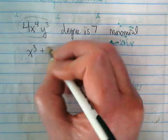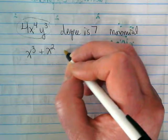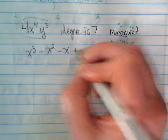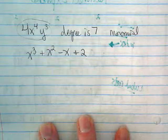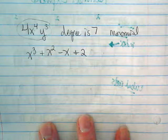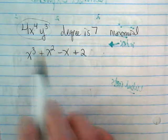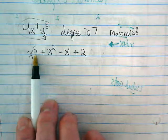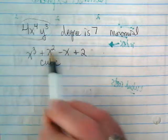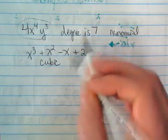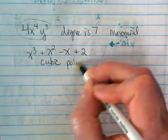Let's try this example. x to the third plus x squared minus x plus two. To name it, you only look at its highest exponent. What's its highest degree? Three. Cubic. It's got one, two, three, four terms. So it is a cubic polynomial.